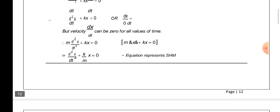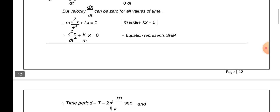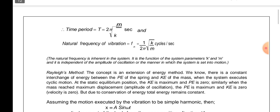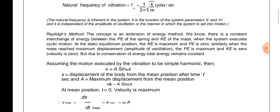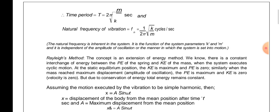From the energy method, we obtain d²x/dt² + (k/m)x = 0, which is the equation of SHM. The natural time period is T = 2π√(m/k), and the natural frequency fn = 1/(2π) · √(k/m) cycles per second.